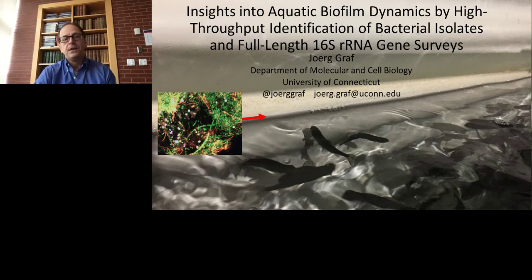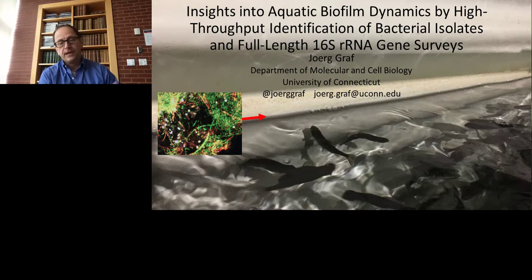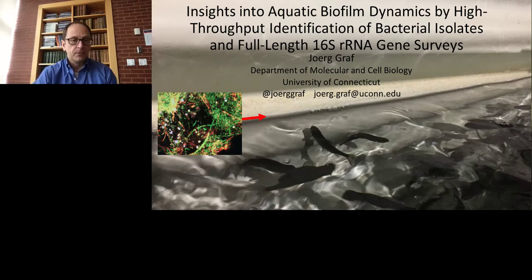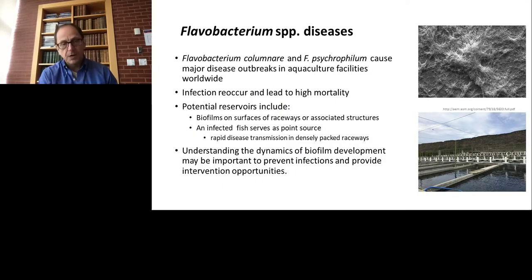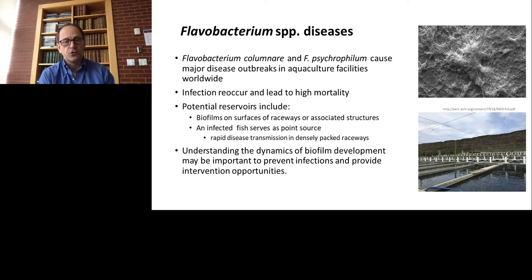What you see here on this slide is a raceway of a commercial trout farm. Where the arrow is pointing is where there's a biofilm, and you can see a fluorescent in situ hybridization image of one of such biofilms. We're interested in studying these biofilms because they harbor fish pathogenic bacteria. Specifically, flavobacteria are important pathogens in the aquaculture setting. Flavobacterium columnare and Flavobacterium psychrophilum cause major disease outbreaks in aquaculture facilities worldwide.